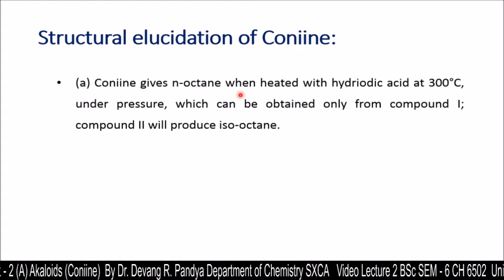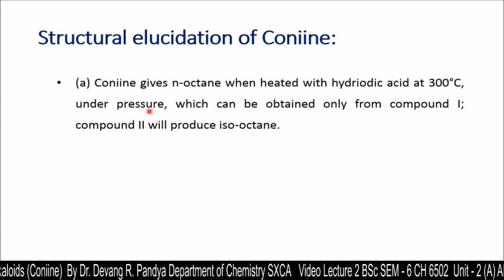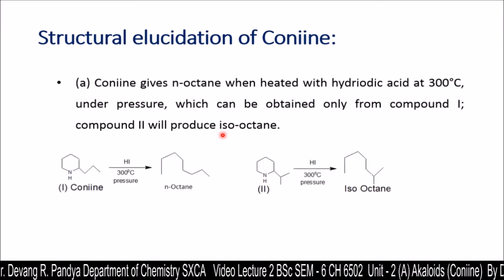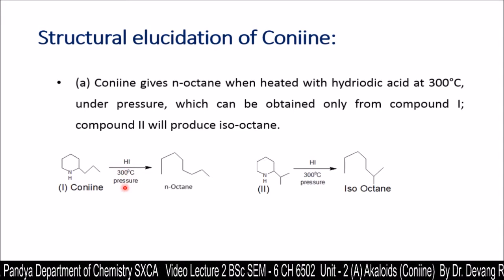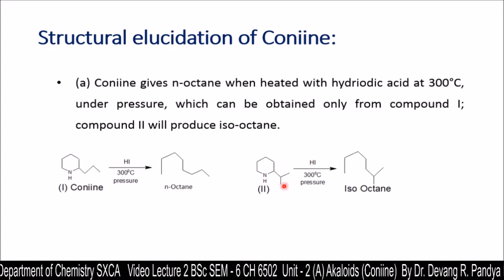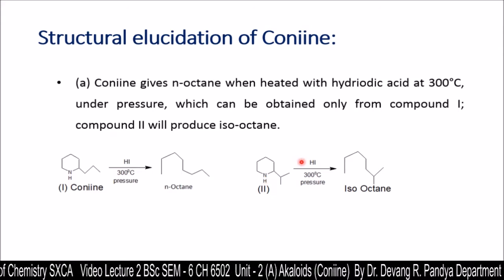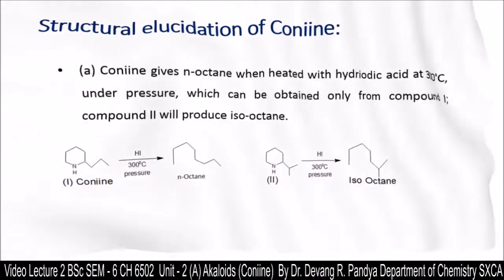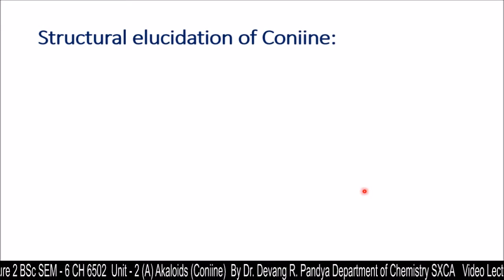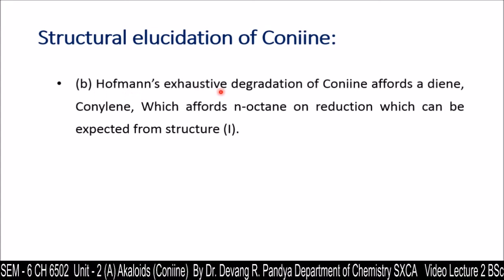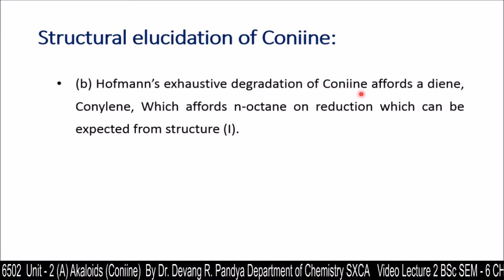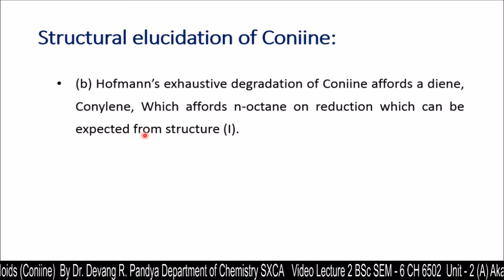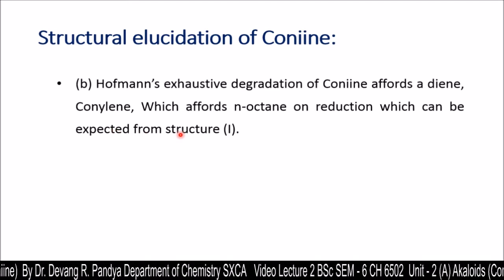First proof: conine gives n-octane when heated with hydroiodic acid at 300°C under pressure, which can only be obtained from structure 1 (normal propyl chain). Structure 2 (isopropyl chain) would produce iso-octane under the same reaction parameters. This confirms that conine has structure 1. The Hofmann exhaustive methylation of conine also offers a diene — coniline — and that coniline gives n-octane on reduction, which is expected from structure 1 only, not structure 2, also proving that conine has structure 1.